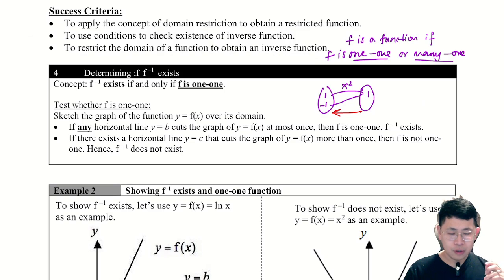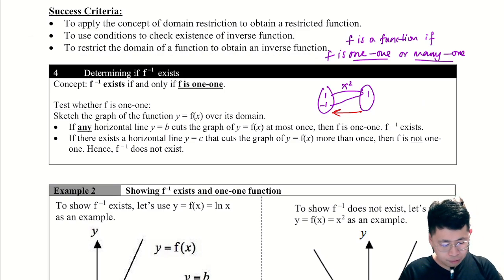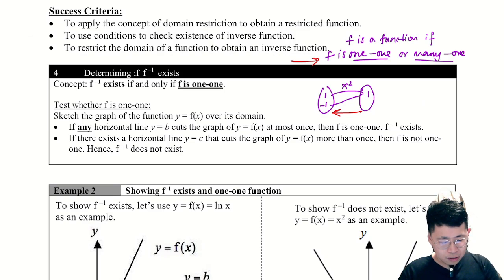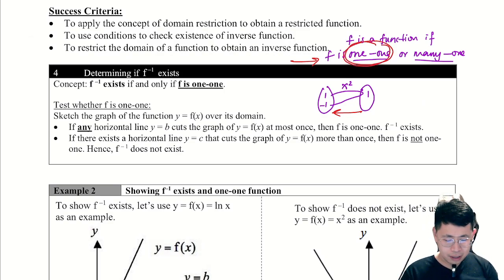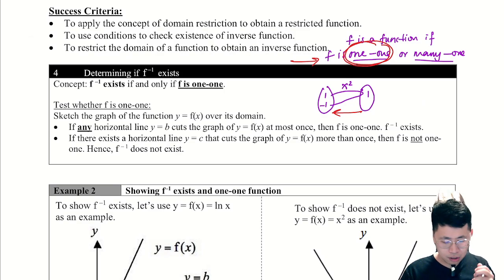So we tighten the criteria: instead of f being one-to-one or many-to-one, the restricted requirement is a one-to-one function. F inverse exists only if f is one-to-one.